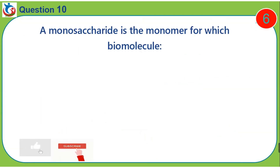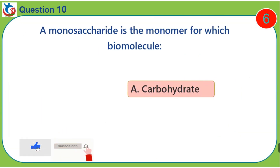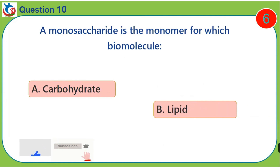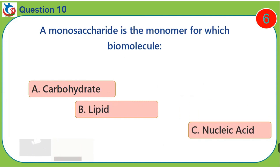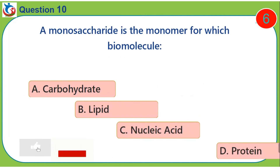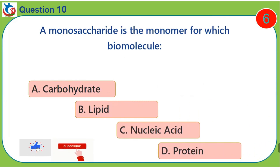Question 10. Monosaccharide is the monomer for which biomolecule? A. Carbohydrates. B. Lipids. C. Nucleic acid. D. Protein.